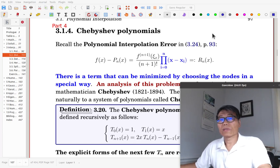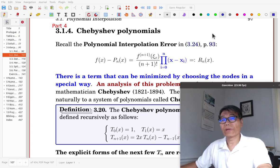It is Part 4 of Section 3.1, Chebyshev Polynomials. Recall the polynomial interpolation error we studied earlier.